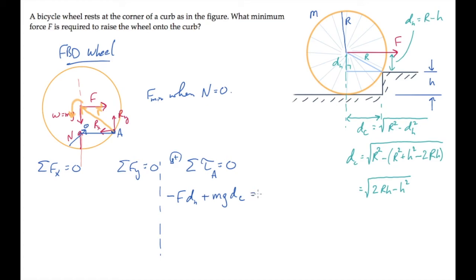And now we can solve for the force F, which is the minimum force, because we've set the normal force to zero. It equals this expression, MG D sub C over D sub H.